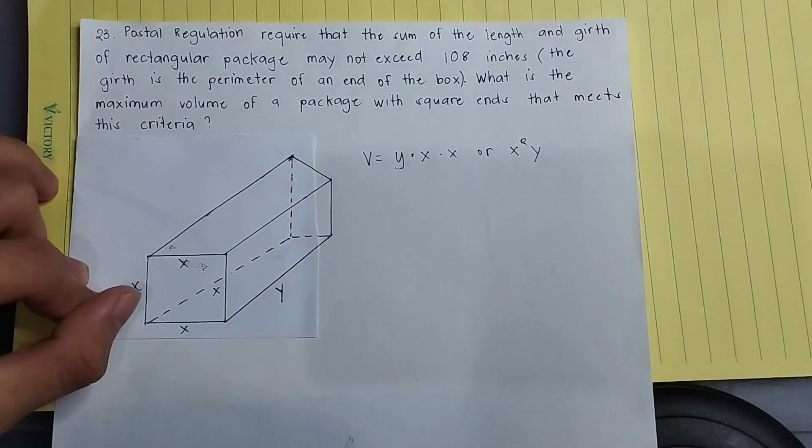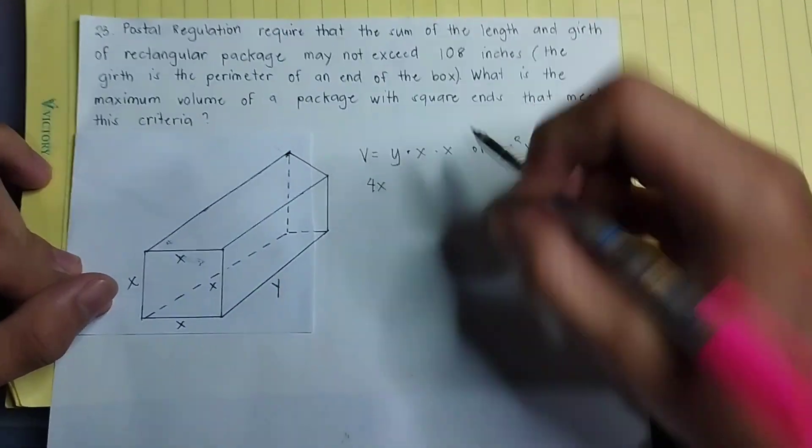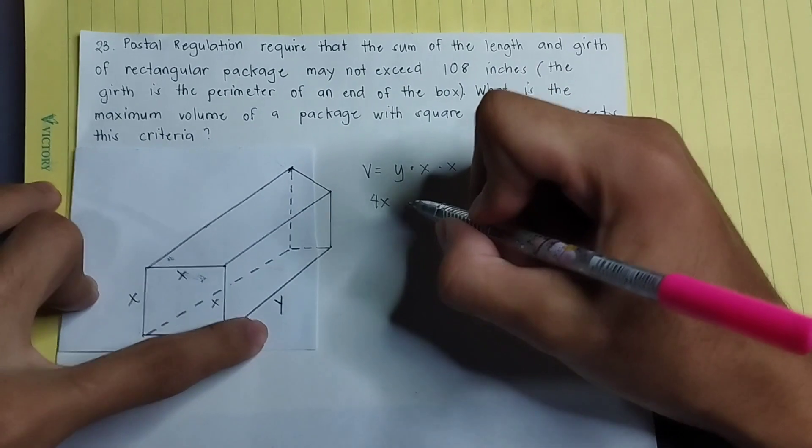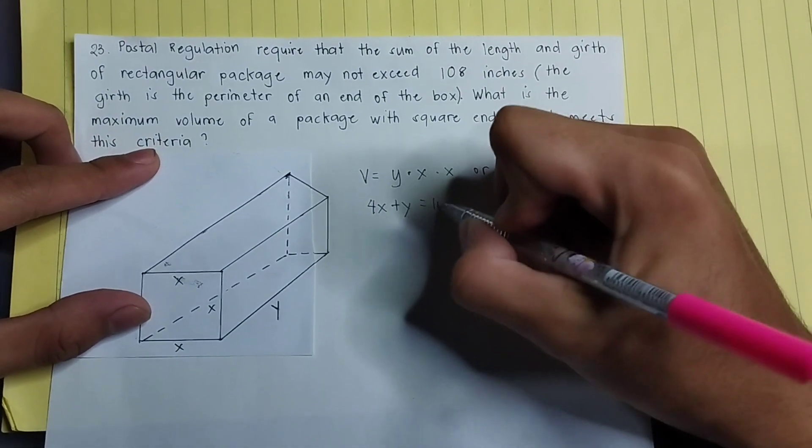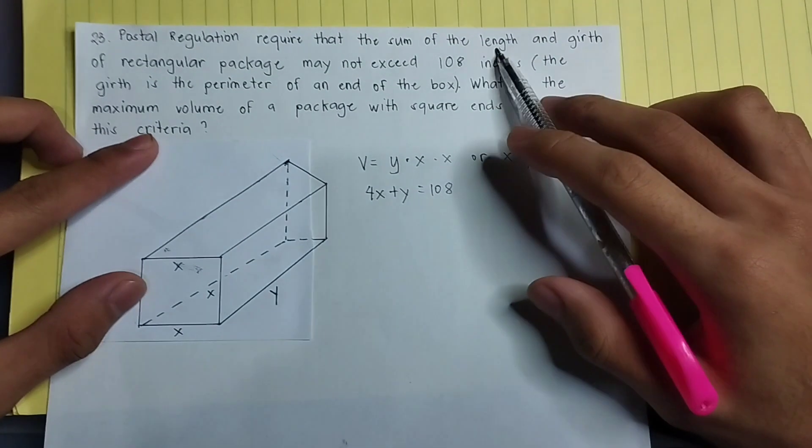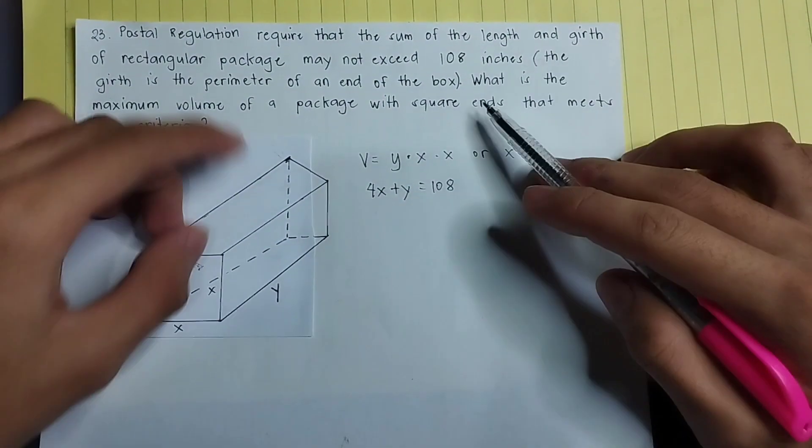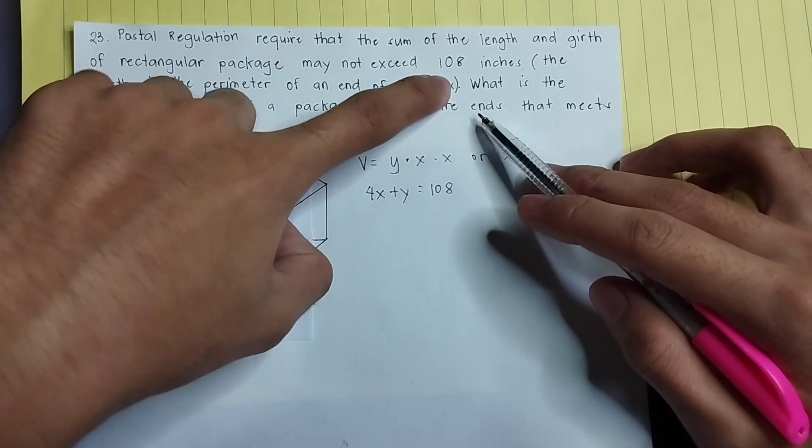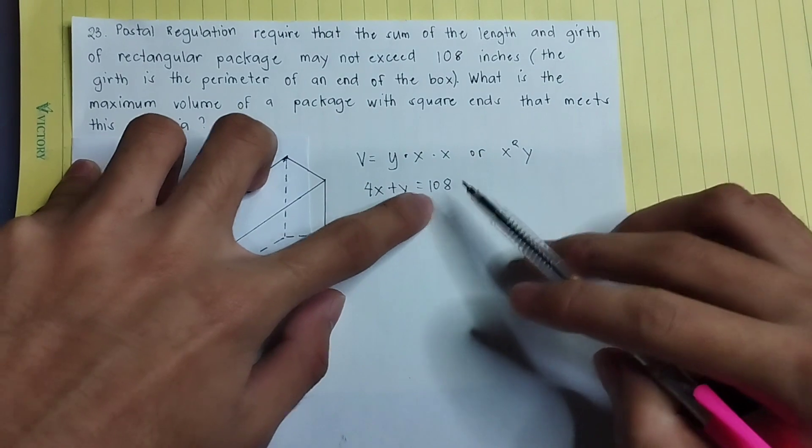And given this function, we have four x's, and then I can use this function: 4x plus y, which is the length, equals 108. It said that the sum of the length and the girth of the rectangular package may not exceed 108 inches.